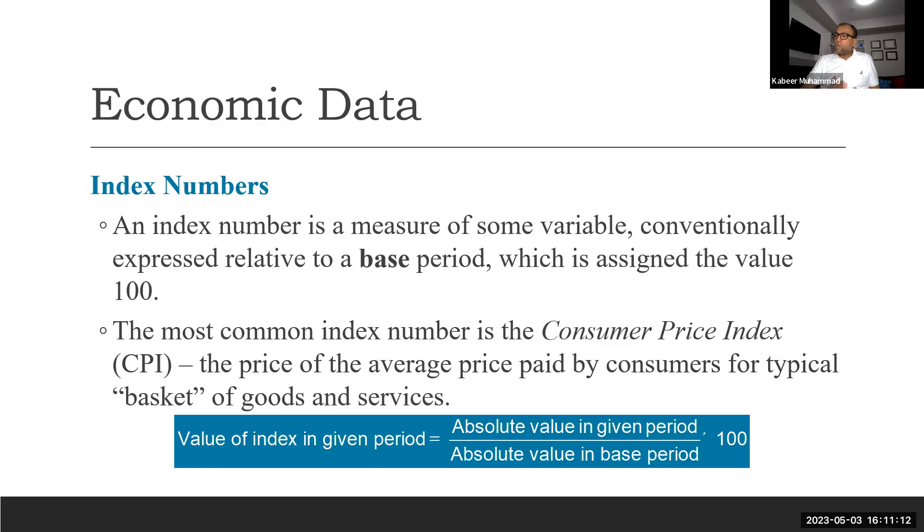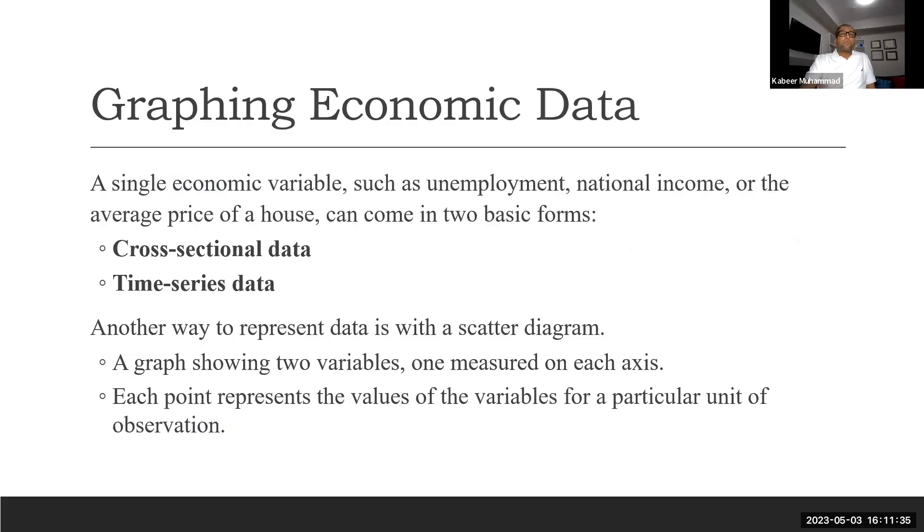In order to calculate the index number, we have a base period. The index number equals the absolute value in a given period divided by the base period times 100. We normally get the indices in terms of percentages, like 9 percent or 10 percent change from the base period.